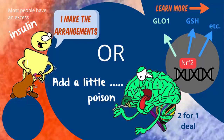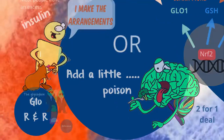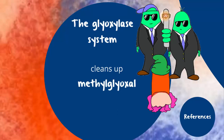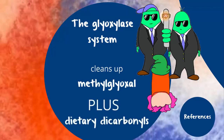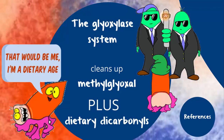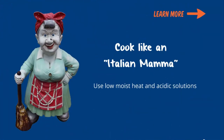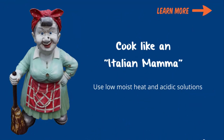GLO1 should be considered a finite resource, so give your little guys some time off. The glyoxalase system is designed to clean up methylglyoxal, but it can and does also work disabling other dicarbonyls, which often arrive via dinner. You can minimize the level of these compounds you're consuming by cooking like an Italian mama: use low moist heat with lots of tomato and lemon juice.